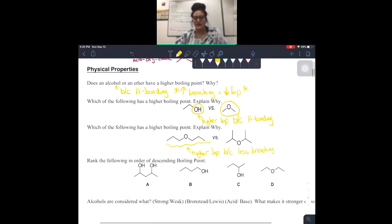So now let's just rank the following in order of descending boiling point. So remember, more hydrogen bonding, higher boiling point. So knowing that, first one is going to be A. That's going to be the highest because we have two alcohols on there. So double the hydrogen bonding, higher the boiling point. Next is going to be B. And the reason for this is because hydrogen bonding again, and it has less branching than C over here.